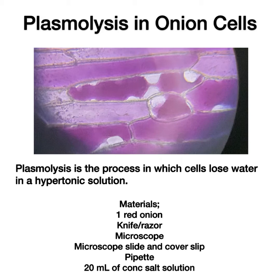What is plasmolysis? Plasmolysis is a process that occurs when plant cells are placed in a solution that has a higher concentration of solutes than the cell does. Because of this higher concentration of solutes outside of the cell, water will move out of the cell, and because of water moving out of the cell, the plasma membrane will pull away from the cell wall. Hence, we say the cell is plasmolysed.